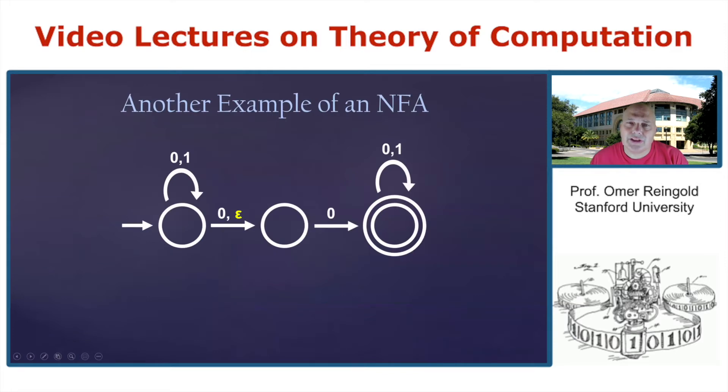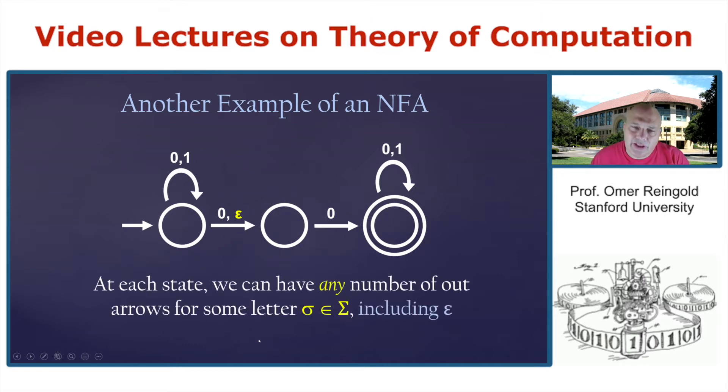So this is a machine with this start state. And you can see that from the same state, there is more than one transition with zero, whereas from this state, there is zero transitions with one. So some states have more than one transition, some have zero transitions. But in addition, we have also this notation of moving with the empty string. So at each state, we can have any number of out arrows for some letter sigma, including for the empty string. This will refer to the ability to take steps without reading anything. So whenever there is an epsilon move, it means that you can take this edge, even without reading any new symbol from the alphabet.